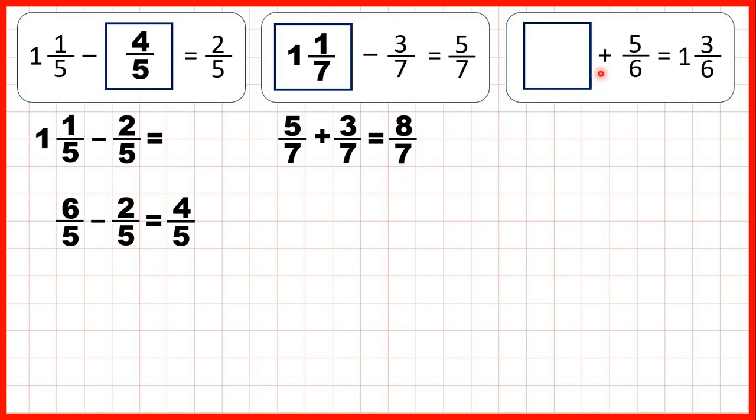Now, something plus five-sixths equals one and three-sevenths. So whenever we have a missing number in an addition problem, we always use subtraction to find our missing number. So we need to work out one and three-sevenths minus five-sevenths to find our missing fraction. But we only have three-sevenths and we need to take five-sevenths away, so let's change this mixed number into an improper fraction.